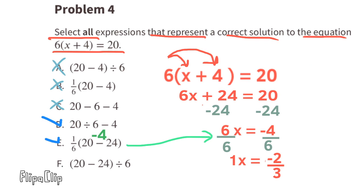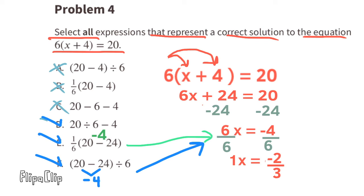Expression E is also kept because 20 minus 24 is negative 4, and one-sixth of negative 4 is equivalent to negative 4 sixths. Expression F is also kept because 20 minus 24 is negative 4, and negative 4 divided by 6 is equivalent to negative 4 over 6.